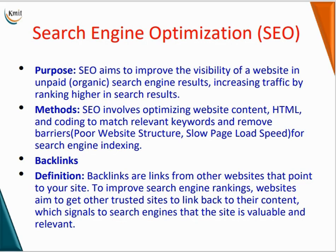Visibility refers to how easily a website can be found by users through a search engine. High visibility indicates that the website will appear at the first or second position, whereas low visibility means it may appear at the fifth or sixth place. SEO involves optimizing web content, HTML, and coding to match relevant keywords and remove barriers like poor website structure and slow page load speed.